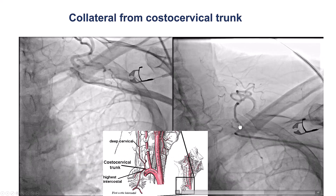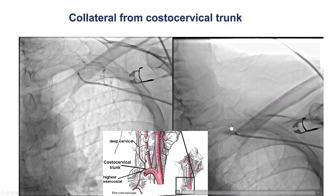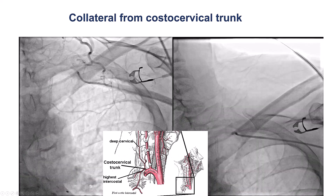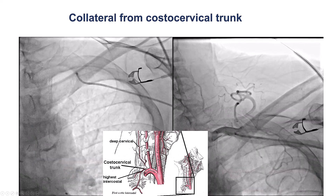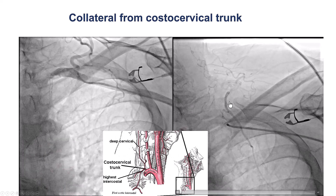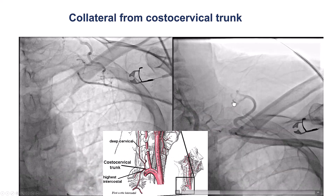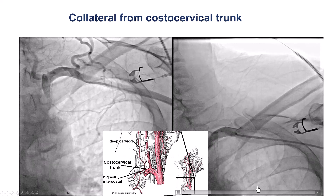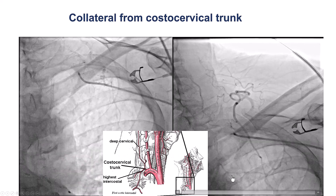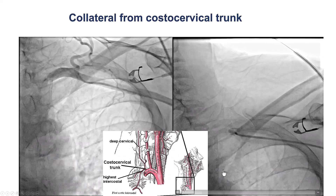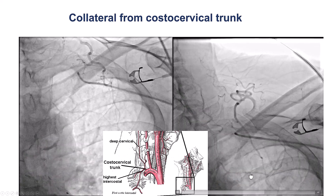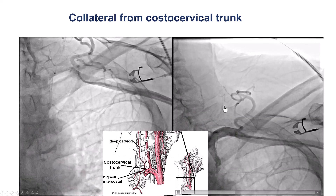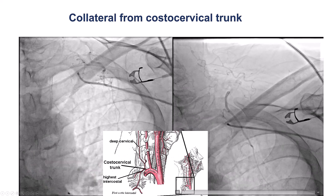This is the costocervical trunk — a branch that comes out of the subclavian artery after the thyrocervical branch. This branch typically gives a deep cervical branch as well as an intercostal branch. In this particular case, the intercostal branch comes down and connects with an intercostal that then connects with the left internal mammary graft distal to the stents. So the LIMA is occluded, but there is a collateral coming from the costocervical that is filling essentially the LIMA and then down the LAD.